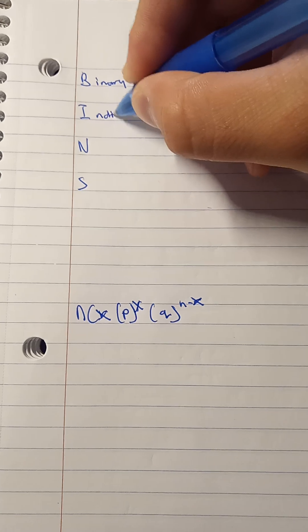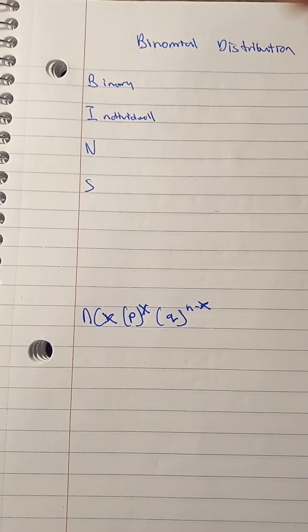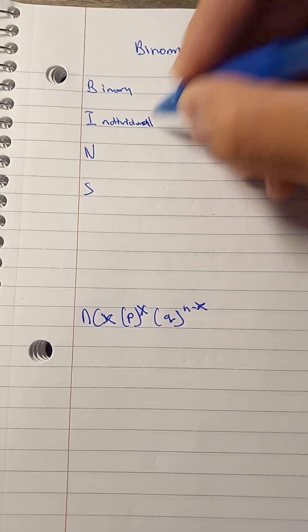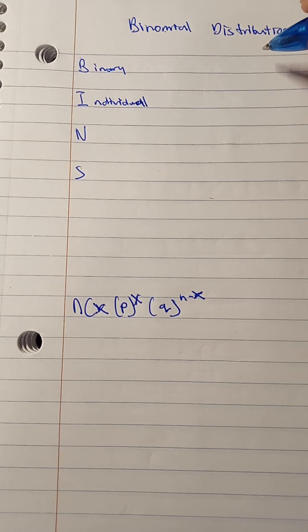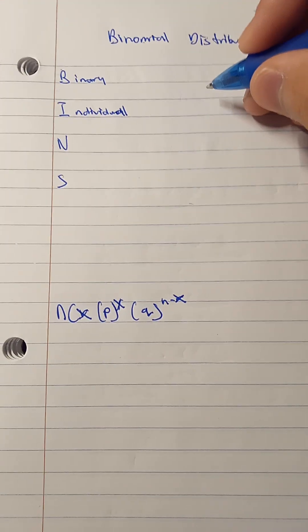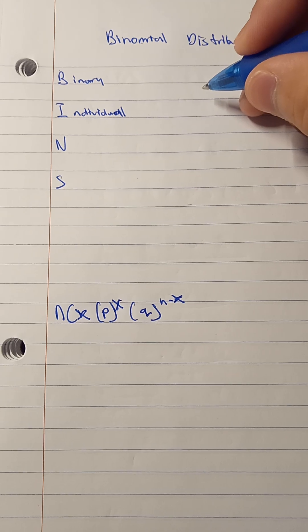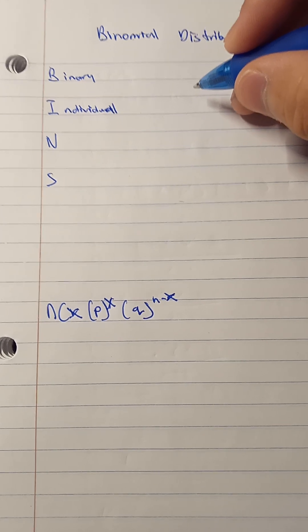I is for individual, which means that every single trial is independent of the last one. Say for example, if I were to flip a coin and it gets a head, then that has no effect on the next coin flip.